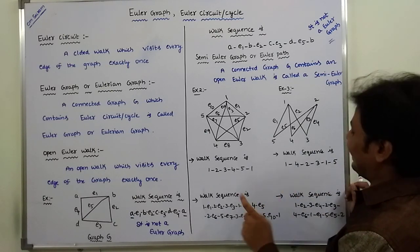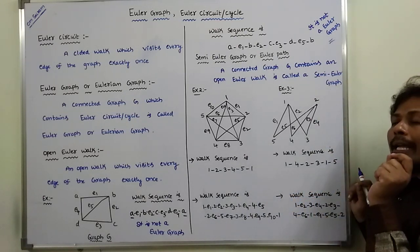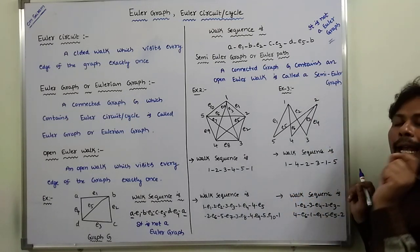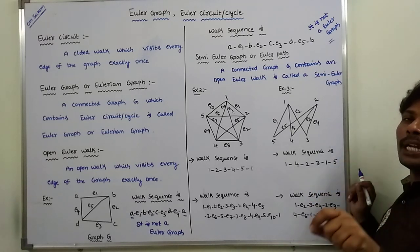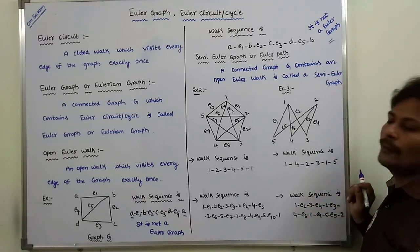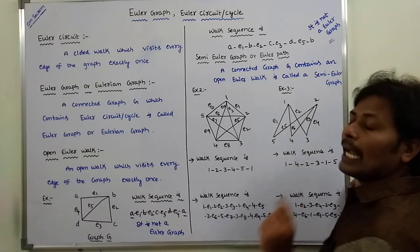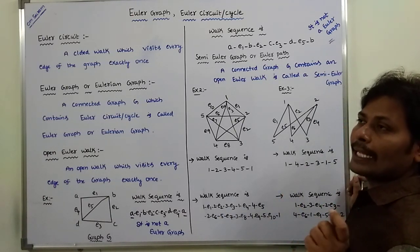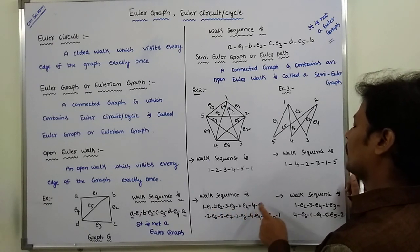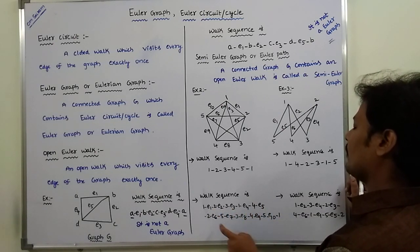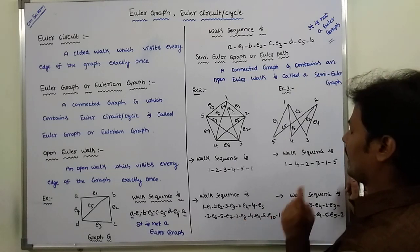It is a closed walk, but the initial or ending vertex should not be repeated in the middle. Regarding the second condition: every edge of the graph is visited exactly once — E1, E2, E3, E4, E5, E6, E7, E8, E9, E10 are all visited.